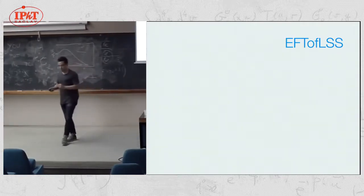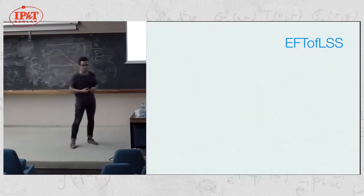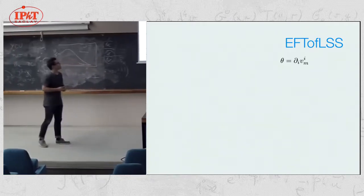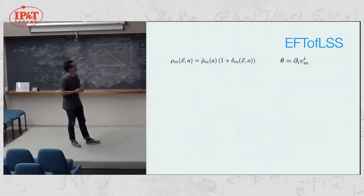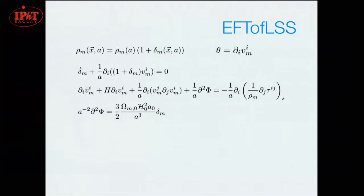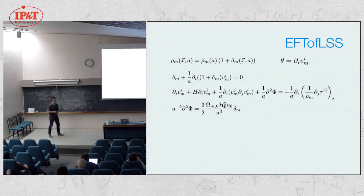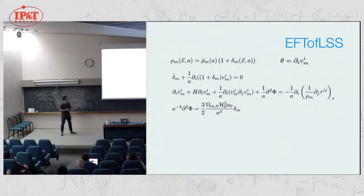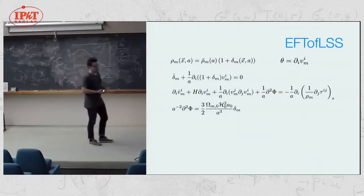There's a program called the EFT of large scale structure which is aiming at doing this, just doing very accurate computations in perturbation theory. As a quick review, the variables we consider are the over-density of matter, delta m, and the divergence of the velocity. We have the continuity equation for these two variables, an Euler equation for the velocity, and Poisson equation.